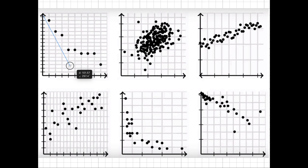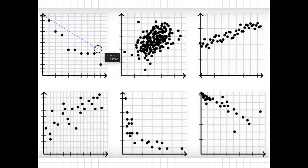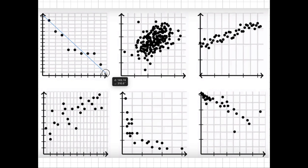So, for example, would it be here? No, because most of the data points are on the right side. Would it be over here? No, because most of the data points are below it now. So we would want something like that. That might be the line of best fit there.